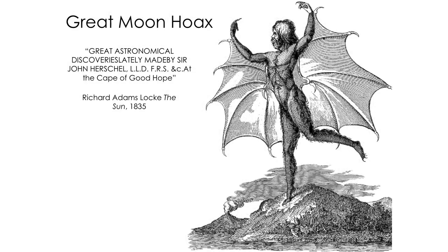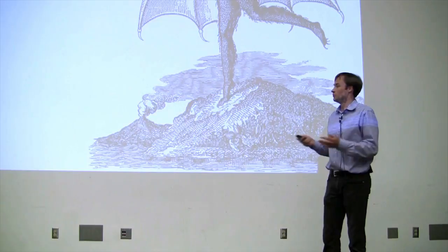The Great Moon Hoax was based on an article written in The Sun, the newspaper in New York at that time. The title was 'Great Astronomical Discoveries Lately Made by Sir John Herschel,' one of the more famous astronomers at that time. The claim was that this astronomer had built a big enough telescope to see the moon, and at the moon they were finding unicorns, bat-like humanoids, and beavers that could talk. It would be kind of cool if the moon was like that.